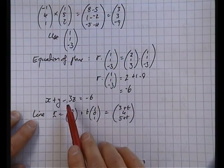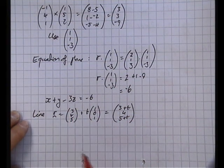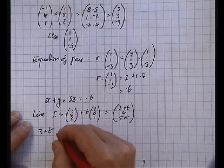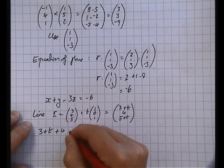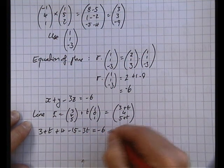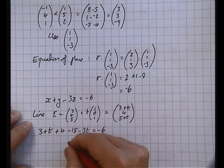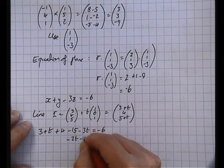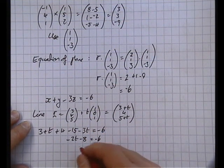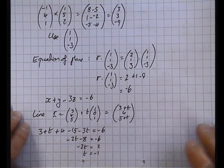And end up with (3 + t) + 4 - 15 - 3t = -6, just by substituting them in. So if I rearrange that, I end up with -2t - 8 = -6, and -2t = 2, or t = -1.